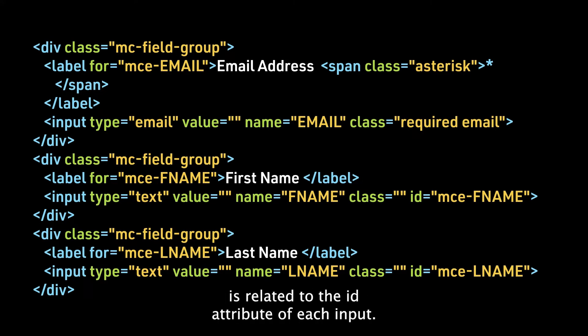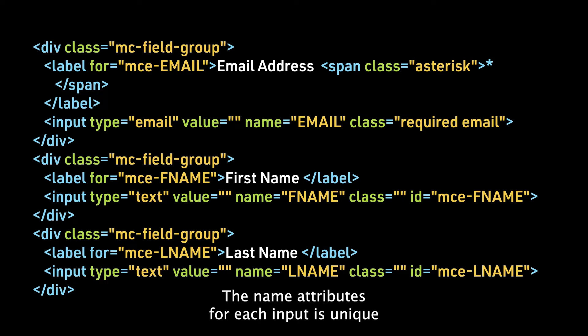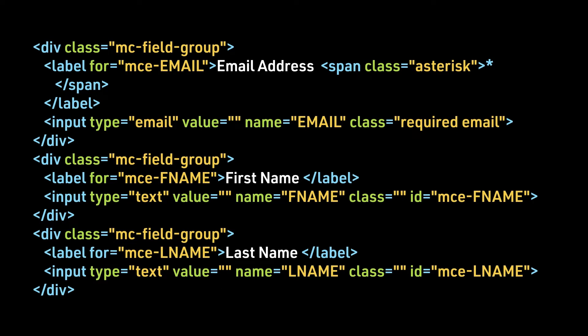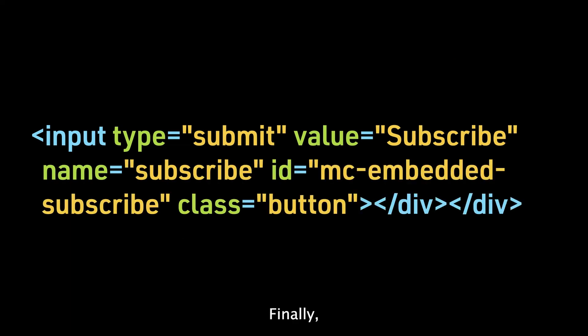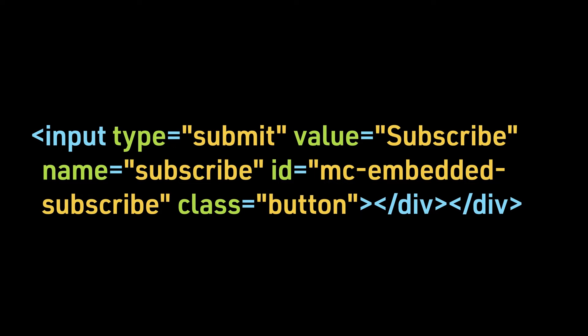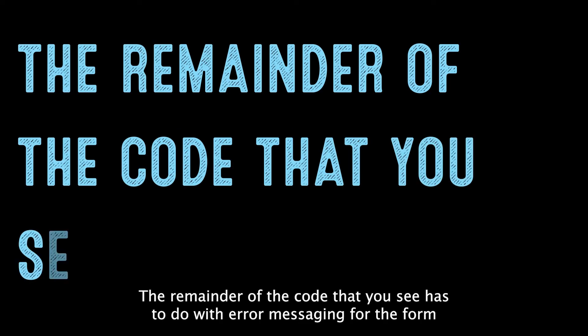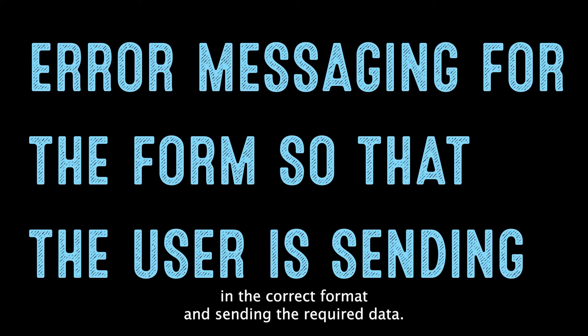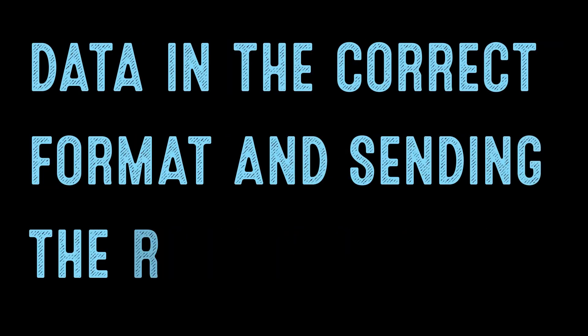You can see how the for attribute of each label is related to the ID attribute of each input. The name attributes for each input are unique so that you can collect these three unique data points. At the end of the form, you will see the input that submits the form. The remainder of the code has to do with error messaging for the form, so that the user is sending data in the correct format and sending the required data.